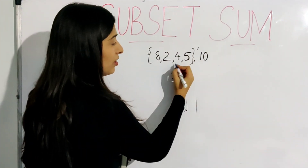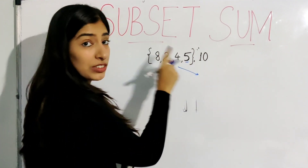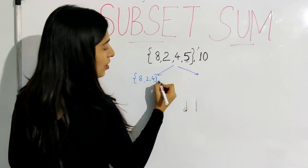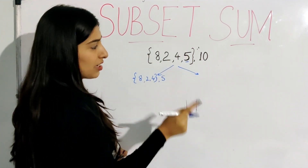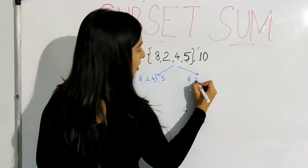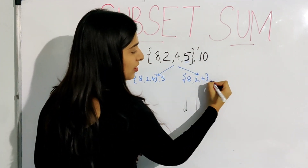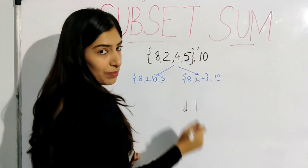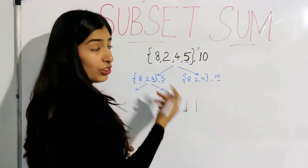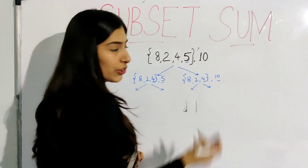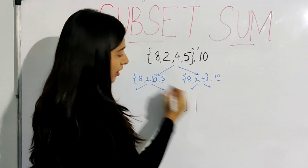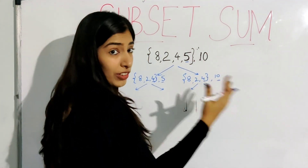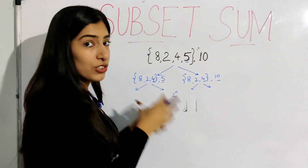Let's go through the subproblems. Starting with the last element 5, there are two possibilities: include it or not. If we include it, our subarray becomes [8, 2, 4] and our sum reduces from 10 to 5. If we exclude it, the array is [8, 2, 4] but the sum remains 10. We have divided this problem into two subproblems. Each of those can again be divided into two subproblems for including or excluding 4, and so on. Since there are n elements, if we draw the entire thing it will be of height n — giving 2^n subproblems.